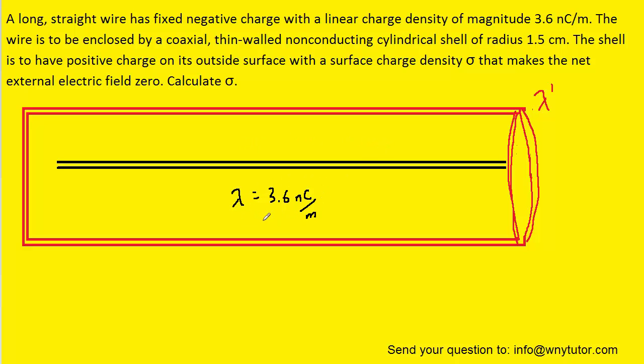We've denoted the linear charge density of that wire here. And then it is coaxial with a thin-walled non-conducting cylindrical shell whose radius is 1.5 centimeters. And we've denoted the linear charge density of the shell as lambda with a prime symbol.